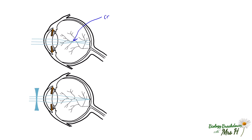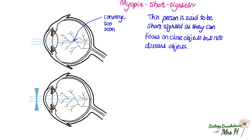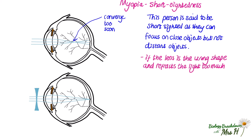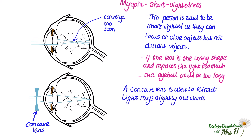If the light rays converge to a focus too soon before they get to the fovea, this will also result in blurred vision. This person is said to be short-sighted, as they can focus on close objects well but can't focus on distant objects. This is known as myopia or short-sightedness. This might occur if the lens is the wrong shape and refracts the light too much, or the eyeball is too long. A concave lens is used to refract light rays slightly outward, so they diverge before they enter the eye, to counteract the over-focusing tendency.